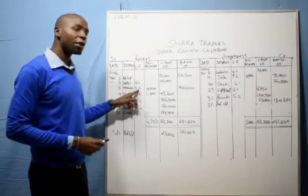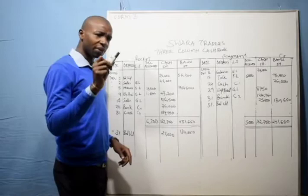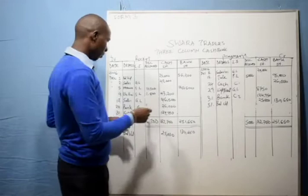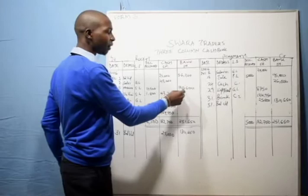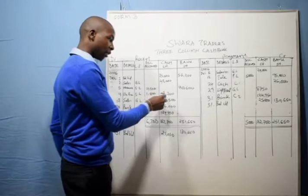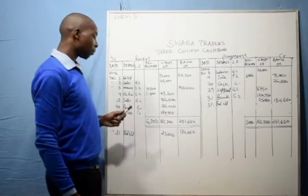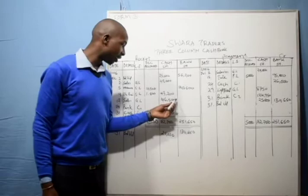On 5th, Mwawura — a name is mentioned, so it is a debtor entry. We had calculated the discount amount of 4,500. It affected the bank because we received a check. Then we have Olekivui, who gave us 43,200 cash after we had given him a discount of 1,800. On 12th, general ledger entry for cash sales — no name mentioned — which is 46,500.